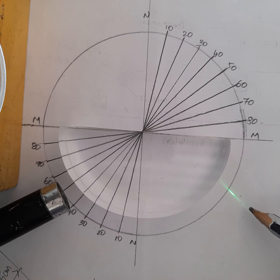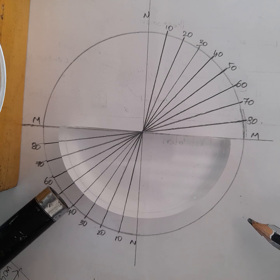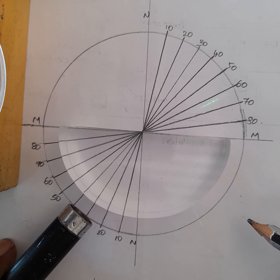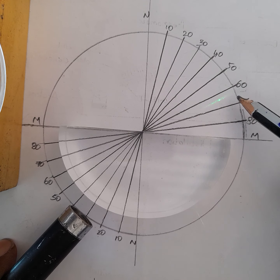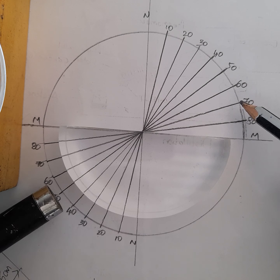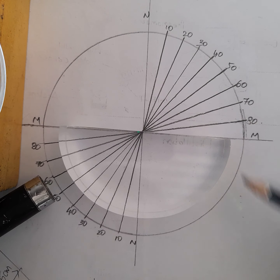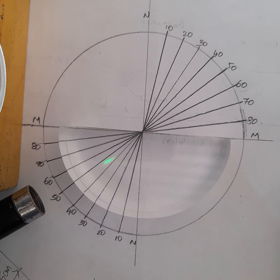This is called total internal reflection. Before the angle of incidence is less than the critical angle, the light ray still passes into the rarer medium. But when the angle of incidence exceeds the critical angle, the light ray comes back into the denser medium — this demonstrates total internal reflection.